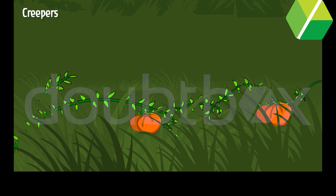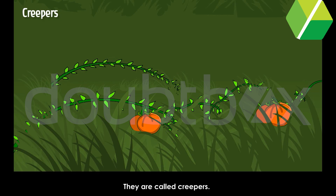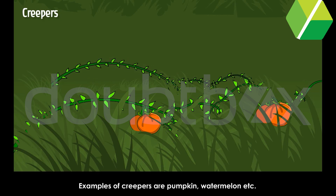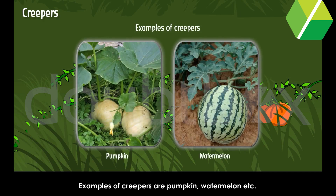Creepers: Some weak-stemmed plants grow spreading on the ground. They are called creepers. Examples of creepers are pumpkin, watermelon, etc.